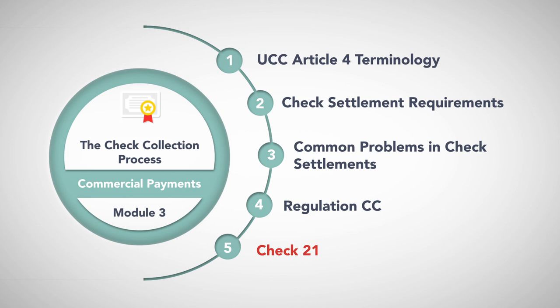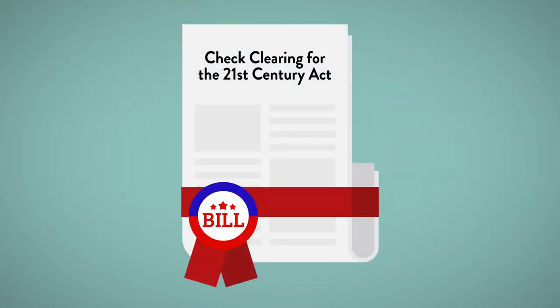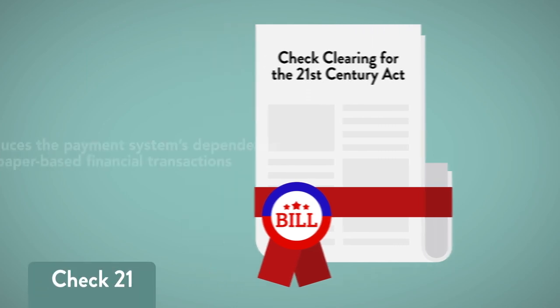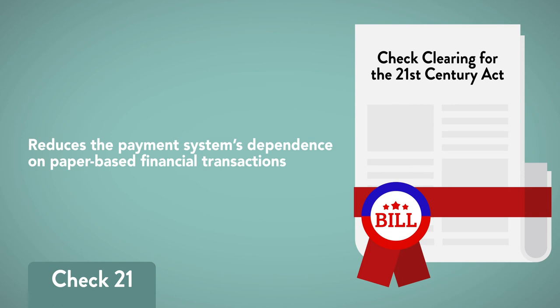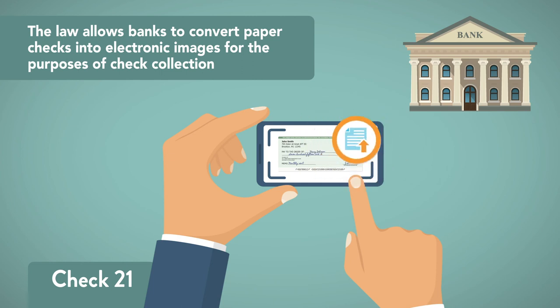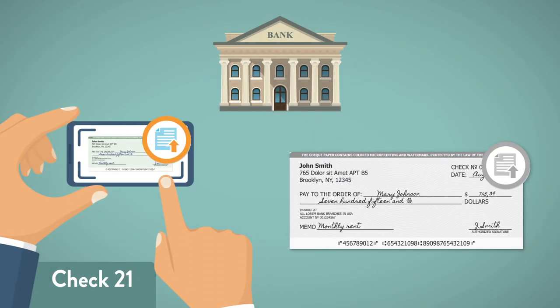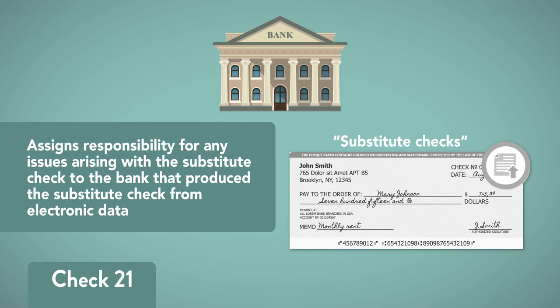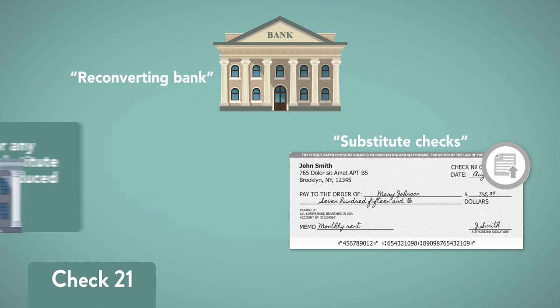Check 21. To secure the benefits of the electronic processing of checks, Congress passed the Check Clearing for the 21st Century Act in 2003 — called Check 21 — which effectively reduces the payment system's dependence on paper-based financial transactions. The law allows banks to convert paper checks into electronic images for the purposes of check collection, a process known as check truncation. The act also provides for the creation of substitute checks, which are grayscale images of original checks and function as their original counterparts. Check 21 assigns responsibility for any issues arising with the substitute check to the bank that produced the substitute check from electronic data, called the 'reconverting bank'; the transmitting bank is called the 'truncating bank.'